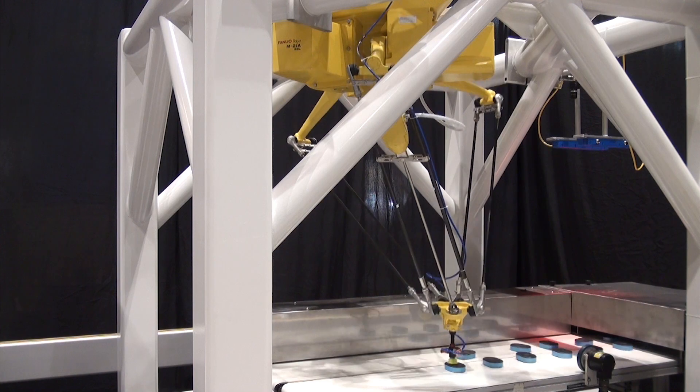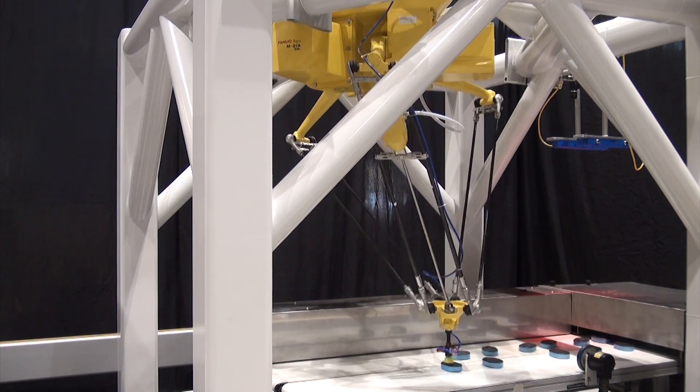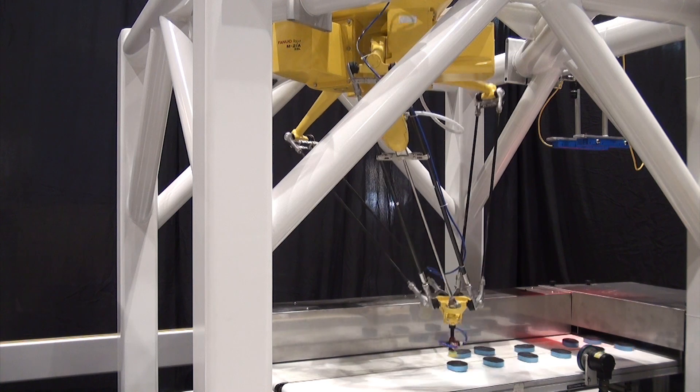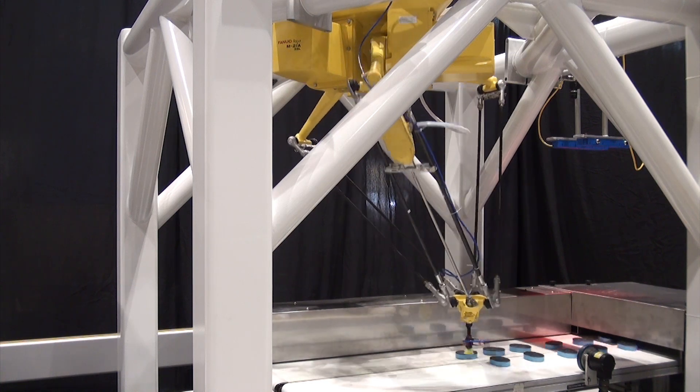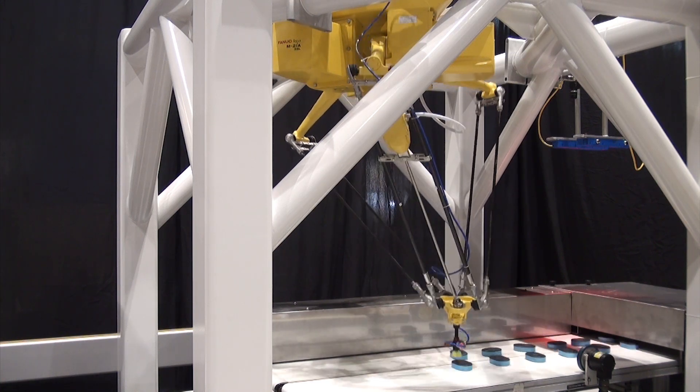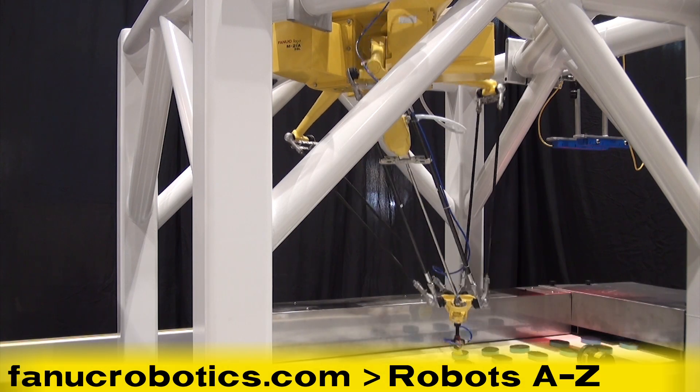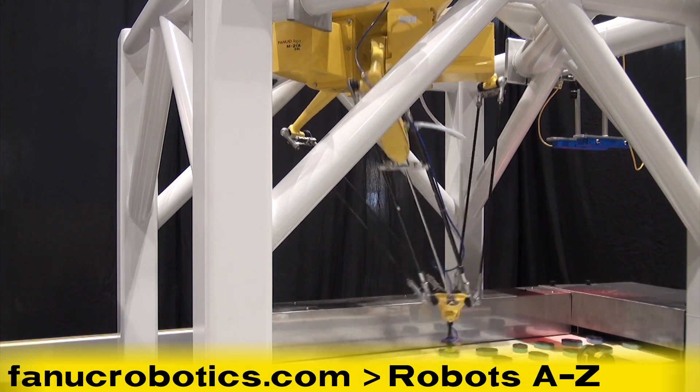A completely enclosed structure also makes it safe for food environments. For complete product information on the FANUC M2IA robot, please visit FANUCrobotics.com and click on Robots A to Z.